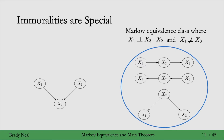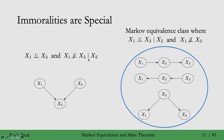Unlike chains and forks, immoralities have this interesting property where x1 is independent of x3 conditional on nothing. So this property does not match the chains and forks one, where we have to condition on x2 to get independence — otherwise they're dependent. And with immoralities, x1 and x3 are dependent if we do condition on x2. It's kind of like the reverse of what's going on in chains and forks.